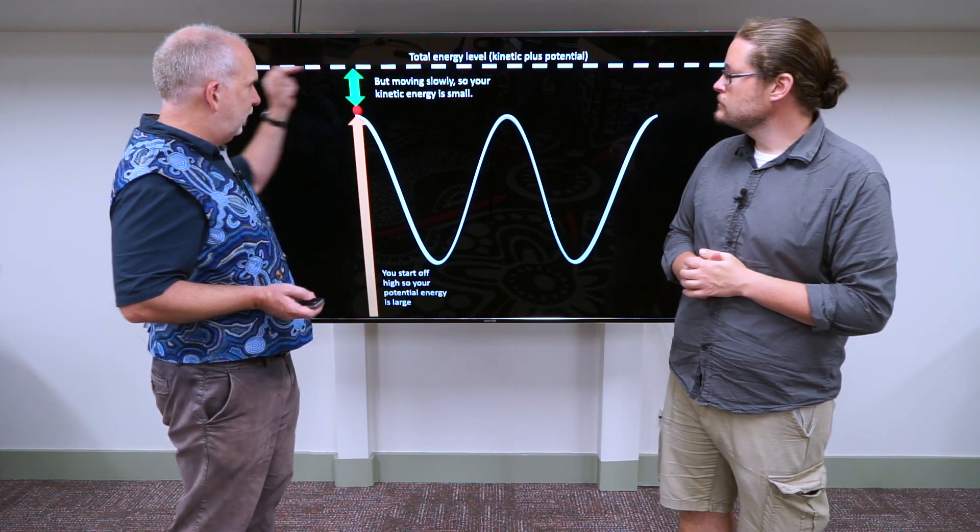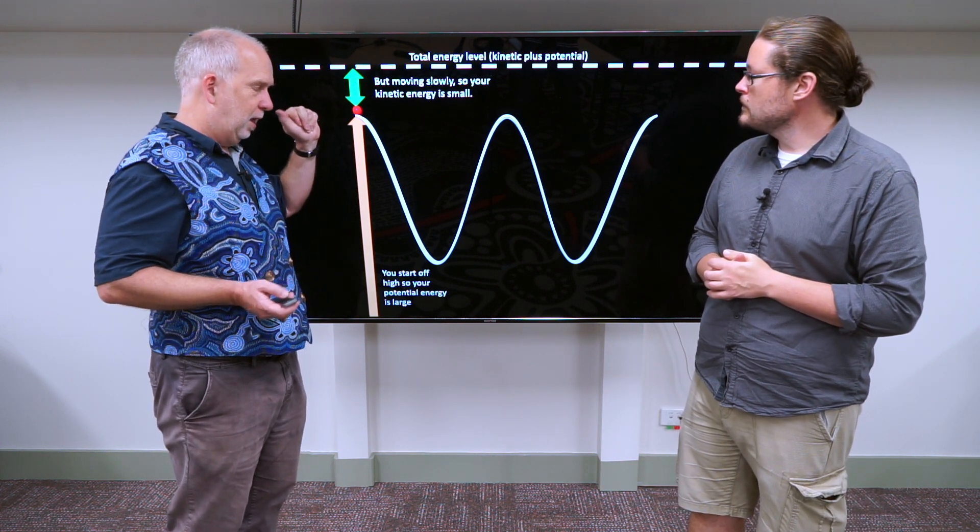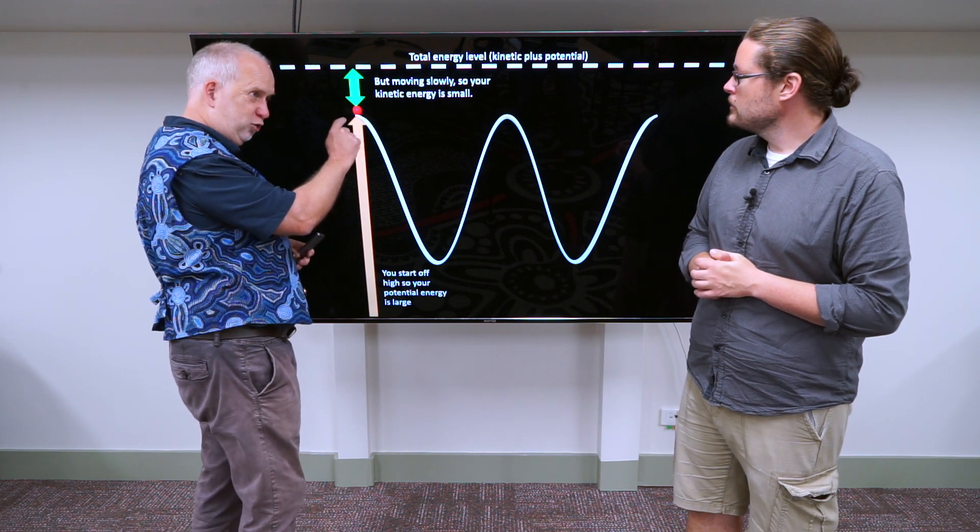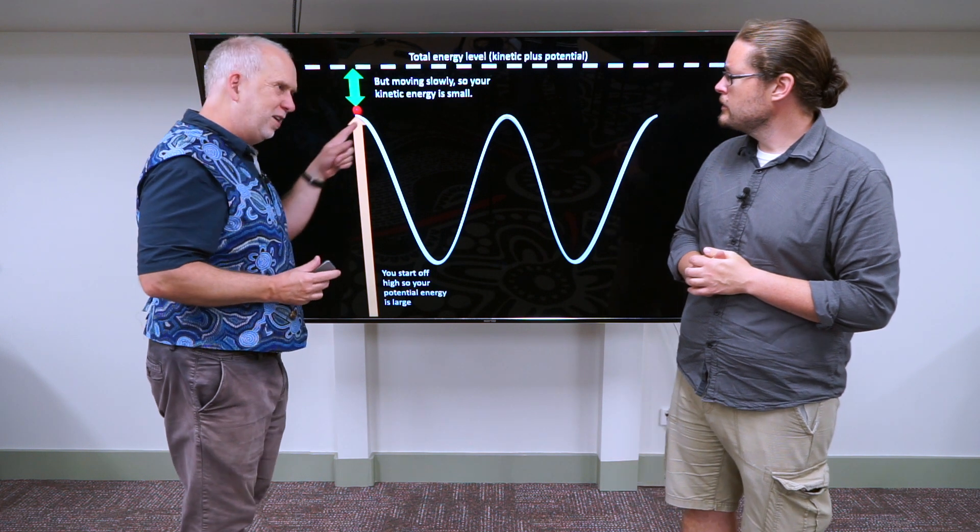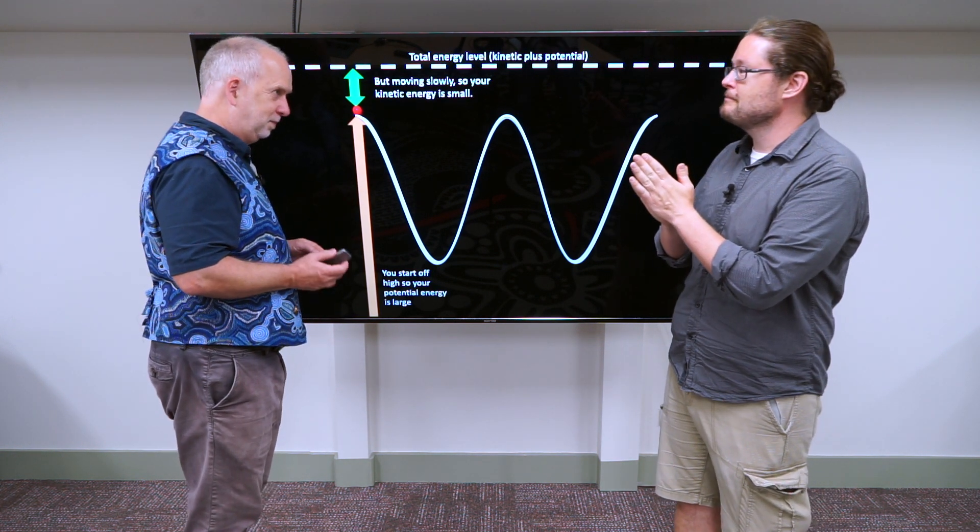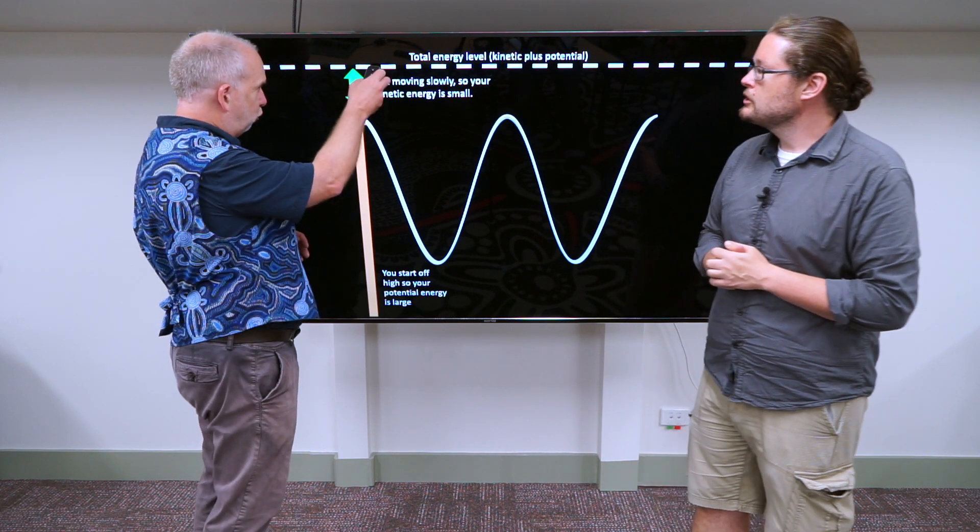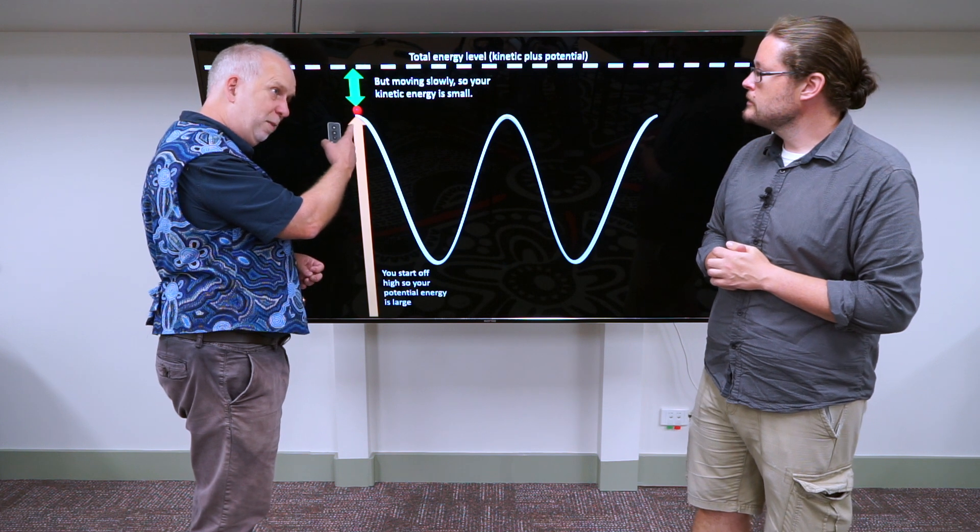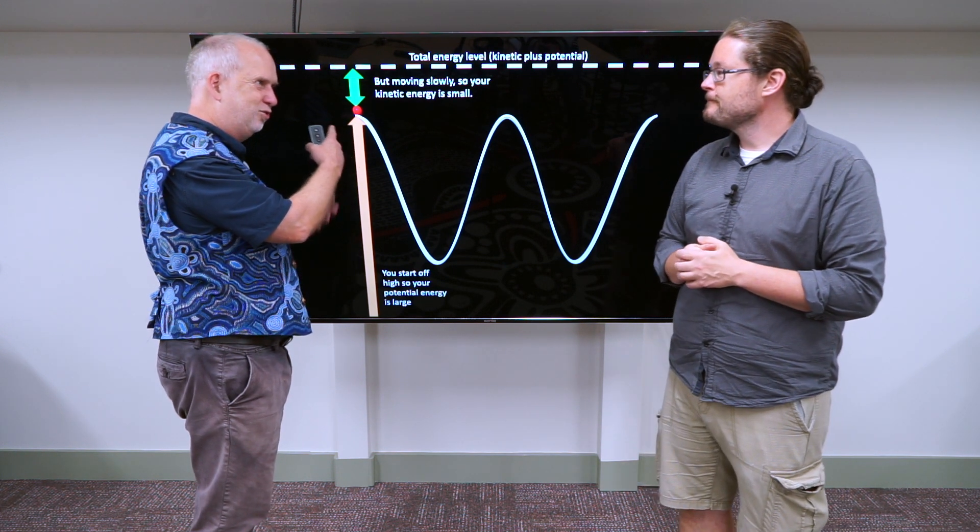So we have a total energy level, and that's got to be a little bit more than the potential energy just at the top here. Why? Because it's moving very slightly. So if it was standing still, it would essentially be all potential energy. So if this dotted line was right here, then when it was here, all its energy would be potential. There'd be nothing left to move.